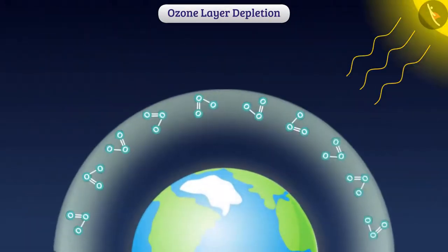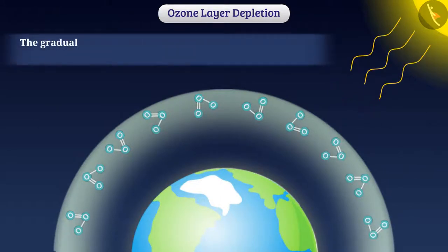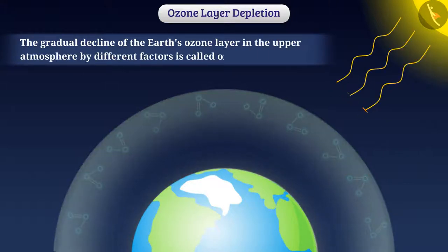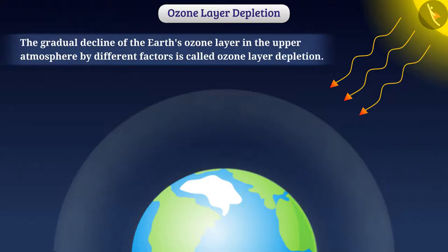Therefore, the ozone layer is gradually declining. The gradual decline of the Earth's ozone layer in the upper atmosphere by different factors is called ozone layer depletion.